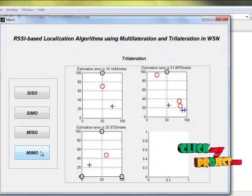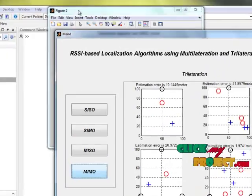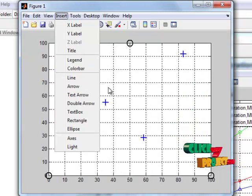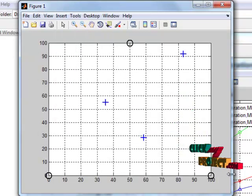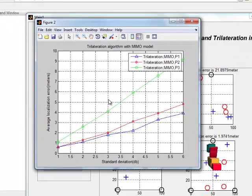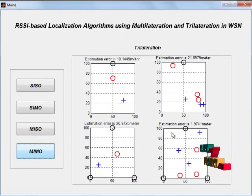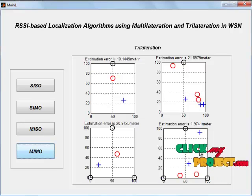And finally for multi input with multi output. Here the inputs are multiple and output also multiple. It is the graph plotted for trilateration algorithm with MIMO model. These are the anchor nodes, these are the mobile nodes, and the red color is the location of mobile node which is estimated.